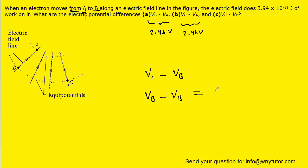But of course, VB minus VB is simply equal to 0 volts. And so this is the correct answer to part C.